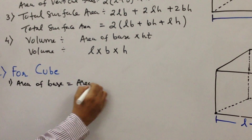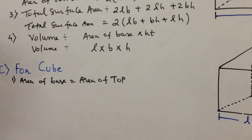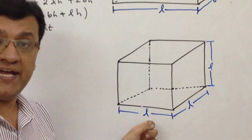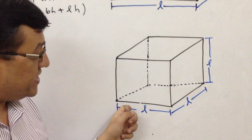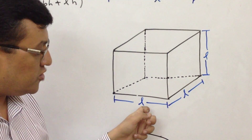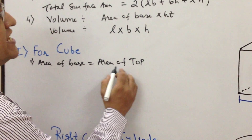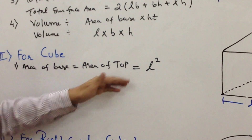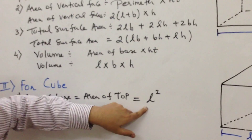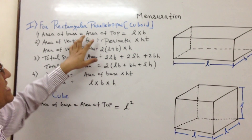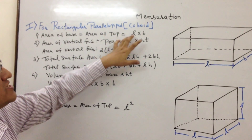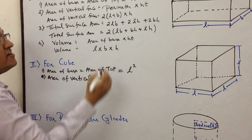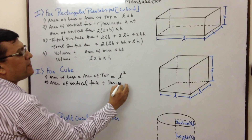Now we find the formulas for a cube. First, area of base equals area of top. Since every single face is a square, the base face is a square, and the area of a square is side squared. Each side is L, so the area of base equals area of top equals L squared.